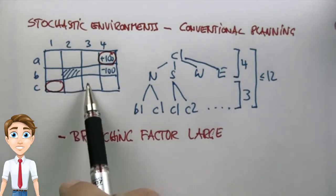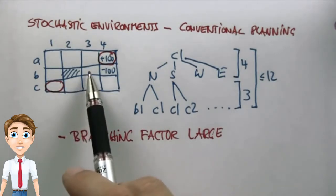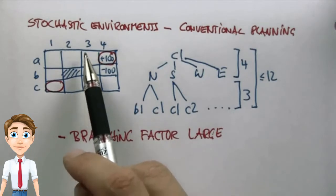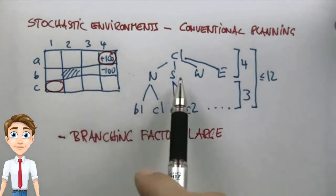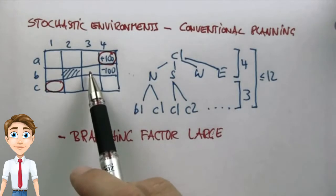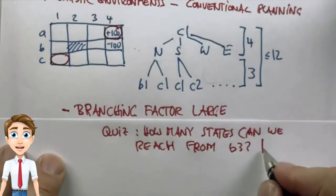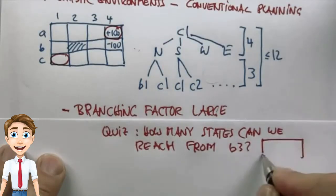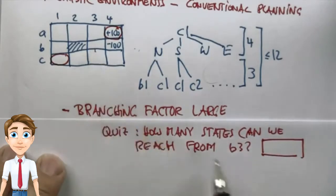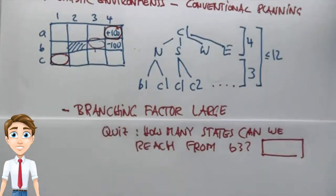So I'm going to ask you: what's the effective branching factor in B3? What is the maximum number of states you can reach under any possible action from B3? And the answer is 8.